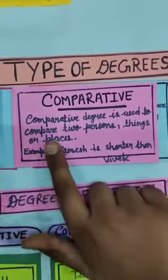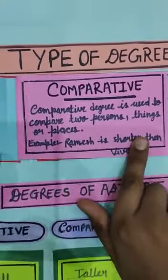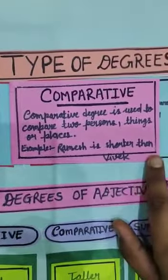What is comparative degree? Comparative degree is used to compare two person, things or places. Example, Ramesh is shorter than Vyvet.